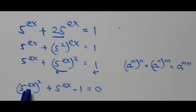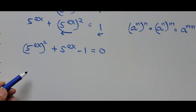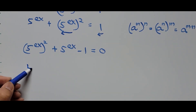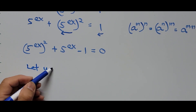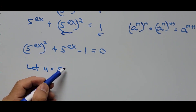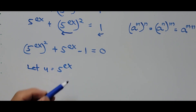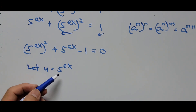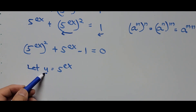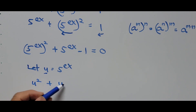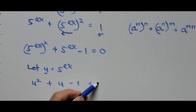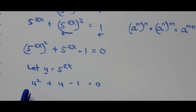From here let's introduce a substitution variable. Let u equal 5 to the power of ex. Substituting into the equation gives us: u squared plus u minus 1 equals 0.